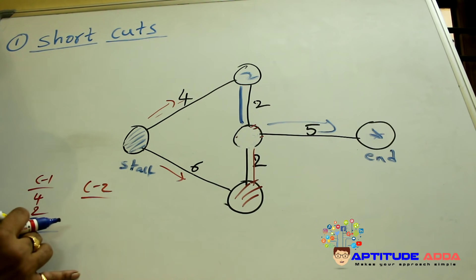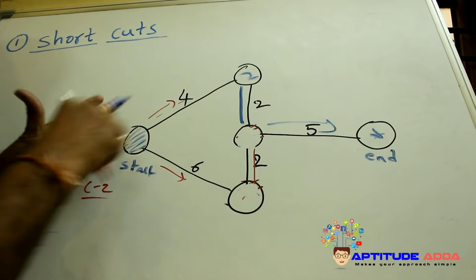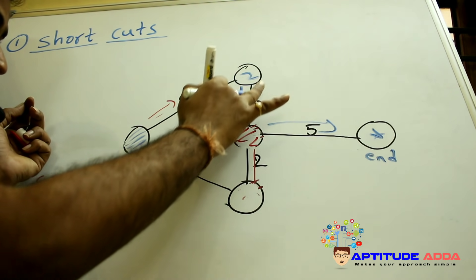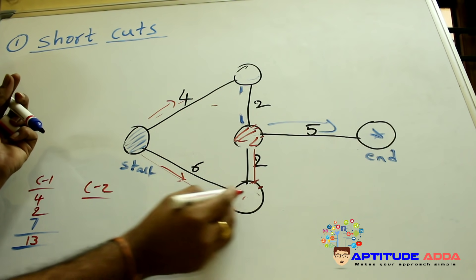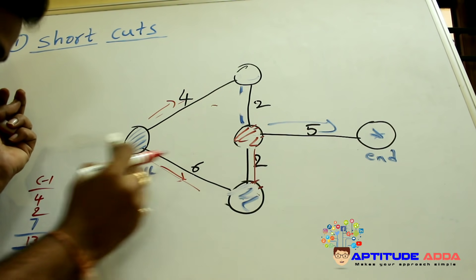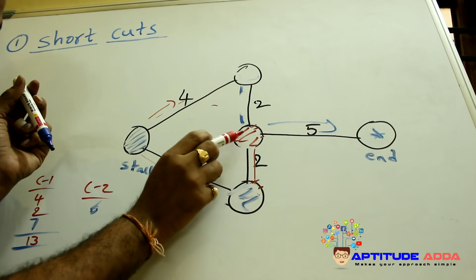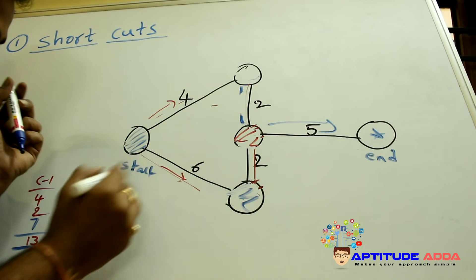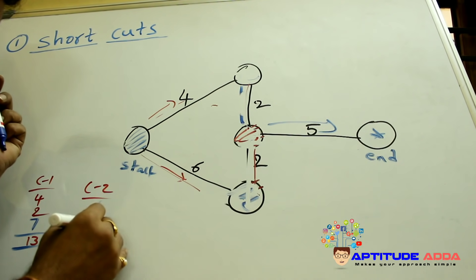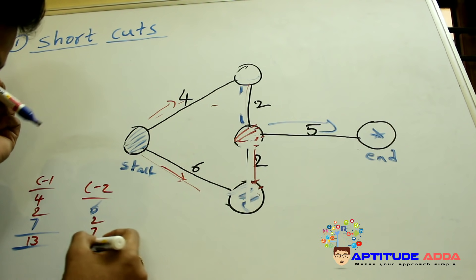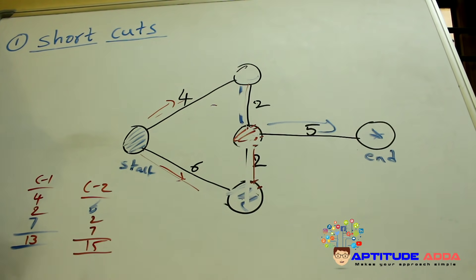In case two, the blue ball travels six units, but the red ball is again in the middle, so we move the red ball two units up. Then the blue ball moves two plus five — seven more units. Total distance: 6 + 2 + 7 = 15 units. So case one (13 units) is better than case two (15 units).